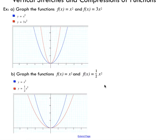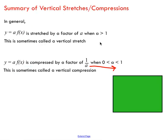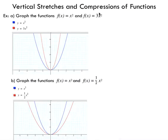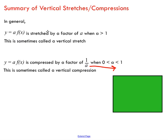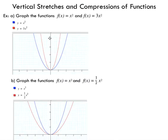Let's consolidate what we've seen and do a summary of vertical stretches and compressions. In general, for any function, if we multiply by an a value that is greater than 1 — for example, 3 — we call this a vertical stretch, and we say it's stretched by a factor of a. So the red graph in that last example was stretched by a factor of 3 in the vertical direction compared to our original graph.